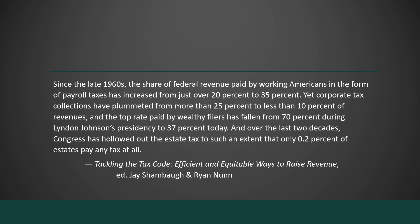This quote from a book called Tackling the Tax Code is worth unpacking. It says: since the late 1960s, the share of federal revenue paid by working Americans in the form of payroll taxes has increased from just over 20 percent to 35 percent, yet corporate tax collections have plummeted from more than 25 percent to less than 10 percent of revenues. The top rate paid by wealthy filers has fallen from 70 percent during Lyndon Johnson's presidency to 37 percent today, and Congress has hollowed out the estate tax so that only 0.2 percent of estates pay any tax at all. The amount collected from more progressive taxes has declined while regressive tax collection has increased, making our overall tax system less equitable over time.